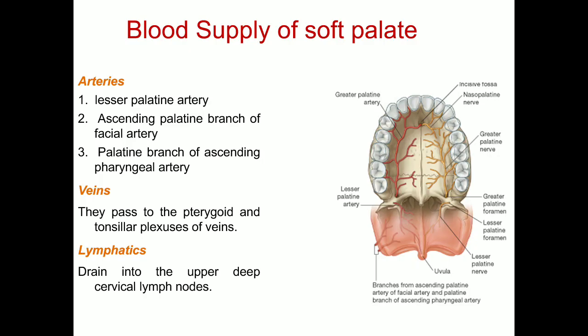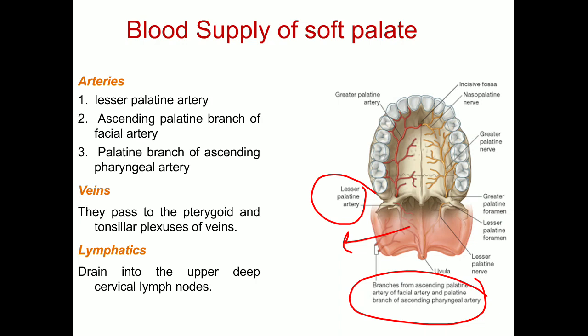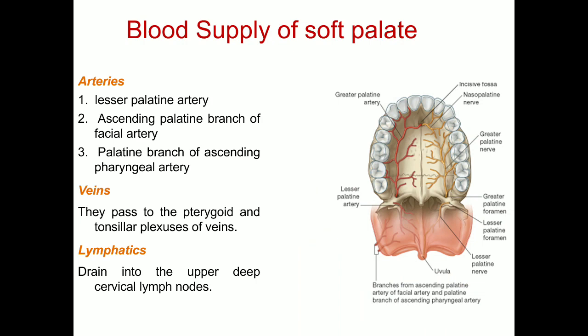The blood supply of the soft palate is mainly from the lesser palatine artery, the ascending palatine artery (a branch of the facial artery), and the palatine branch of the ascending pharyngeal artery. Venous drainage passes to the pterygoid venous plexus and tonsillar venous plexus, and finally into the internal jugular vein. Lymphatics drain to the upper deep cervical group of lymph nodes.